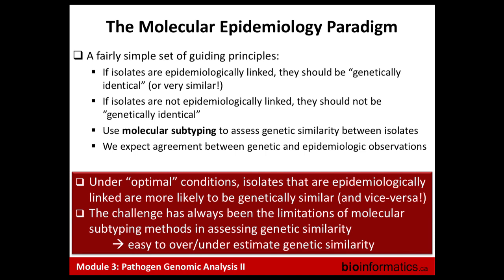The general rule in epidemiology is that if strains are genetically similar to one another, we assume they're epidemiologically linked. This isn't always the case, but that's our starting idea. We can use molecular subtyping to pick apart these groups and see internal structure within them. The challenge is that molecular subtyping methods in the lab have always been limited in the amount of genetic similarity they can compare, which can historically lead to estimation problems.